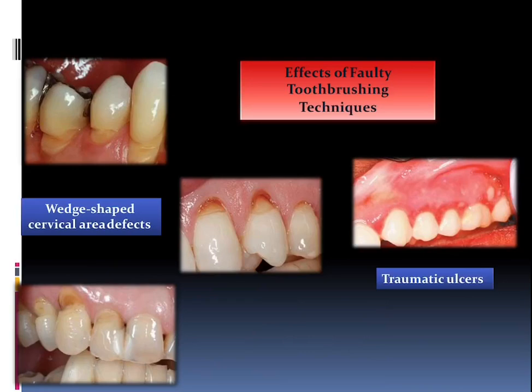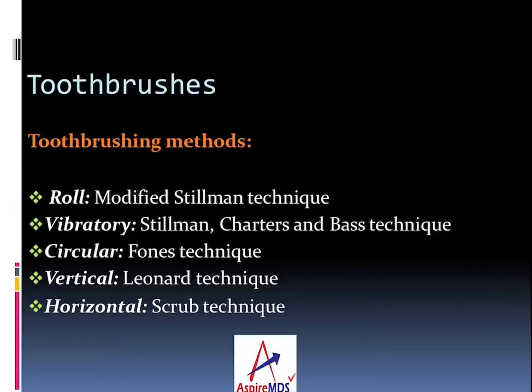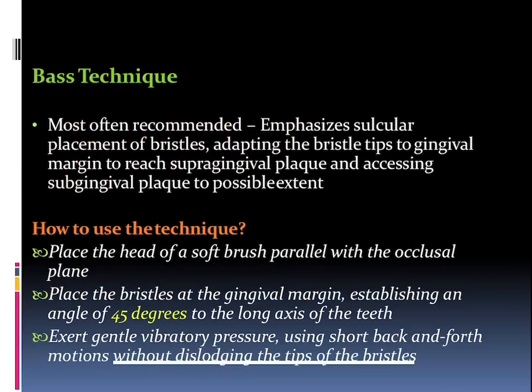These are how unhealthy or faulty tooth brushing techniques lead to problems like wedge-shaped recession or cervical defects and even traumatic ulcers. Talking about tooth brushing methods, the normal roll method can be vibratory, circular, vertical, and horizontal — that is the scrub technique. The roll method includes the modified Stillman technique, vibratory methods like Stillman, Charters, and Bass technique, the circular method — that is the Fones technique — vertical method — that is the Leonard technique — and horizontal brushing — the scrub technique.